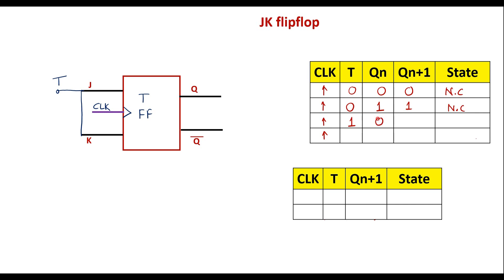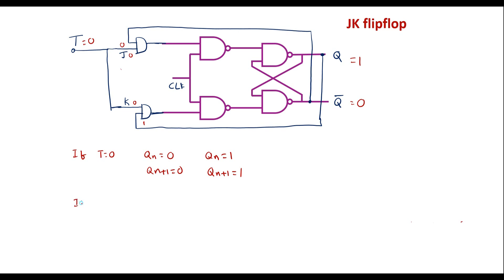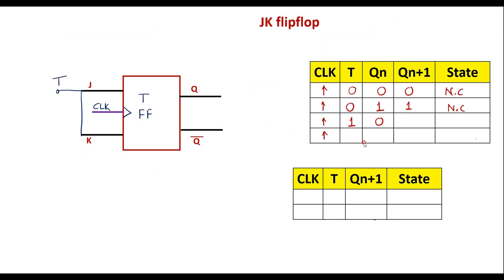Now let me consider T equal to 1 and Qn equal to 0. With Qn equal to 0, Q bar will be 1. T is connected to both inputs of the AND gate, so both J and K become 1. When both inputs of the JK flip-flop are 1, it will toggle. Therefore, Qn+1 equals 1 — that is, toggle.